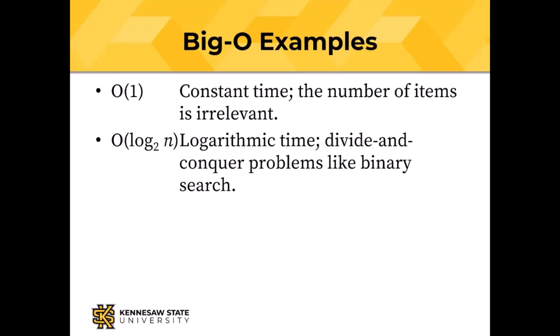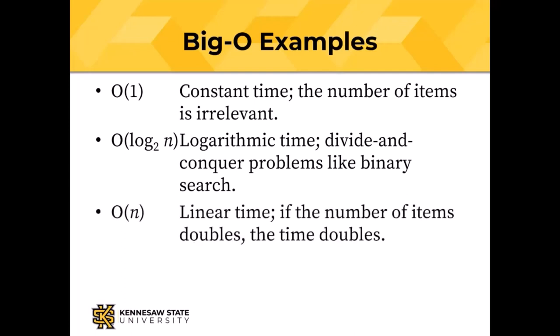An algorithm of order O(log₂ N) is a divide-and-conquer type. Binary search, where items are sorted, looks at the middle item first, then determines whether the target is in the front or back half, continuing to split until found or confirmed absent. If you double the number of items, you only add one more step to the search. O(N) is linear search — if items double, time doubles. O(N log N), or log-linear time, applies to some sort algorithms.